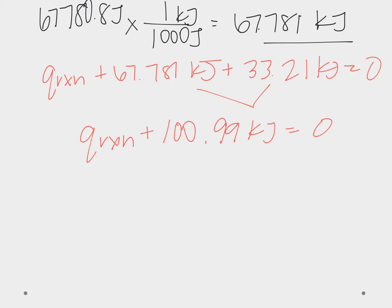And then if I want to solve for Q reaction, I just take the opposite sign of this. Negative 100.99 kilojoules of heat.